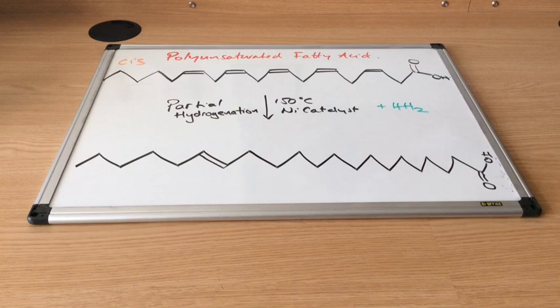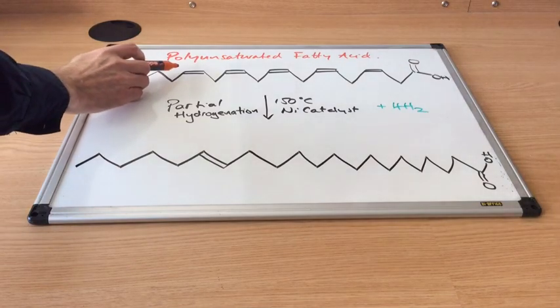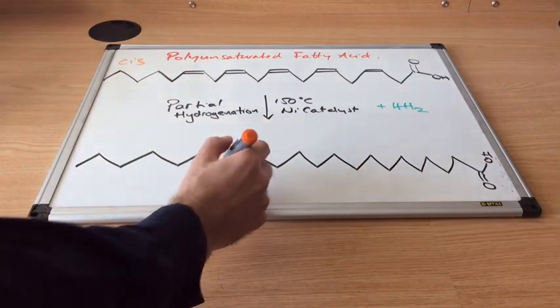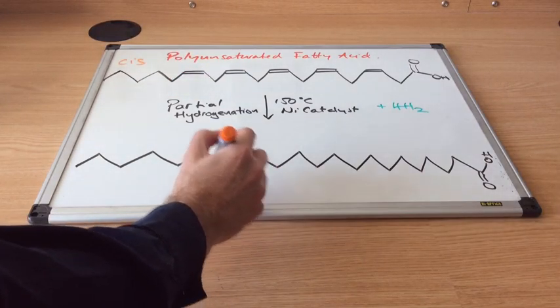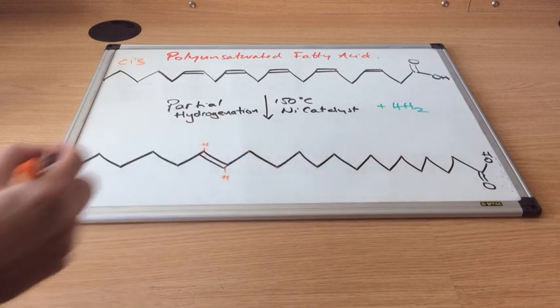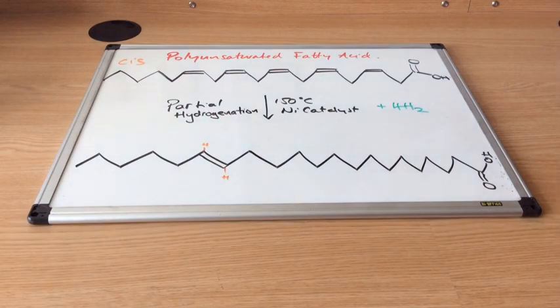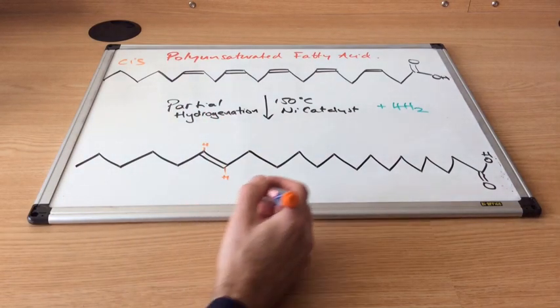But can you see what's happened to this double bond? Hydrogenation produces trans isomers. So instead of the two hydrogens being on the same side of the double bond, we've now got hydrogen here and a hydrogen here. So this is what we call a trans fat.